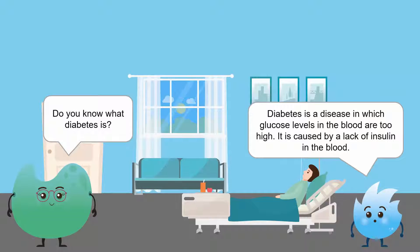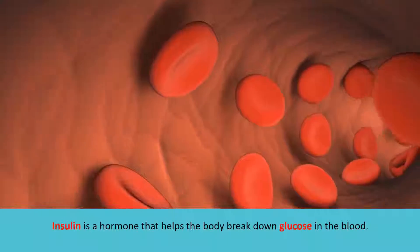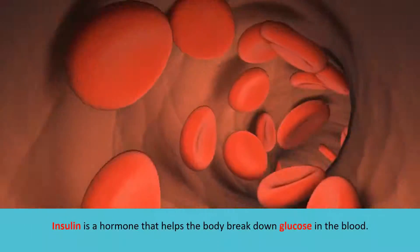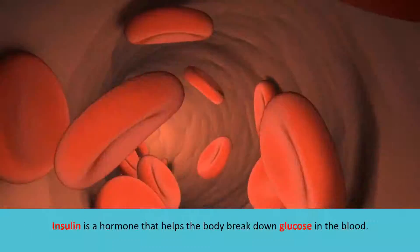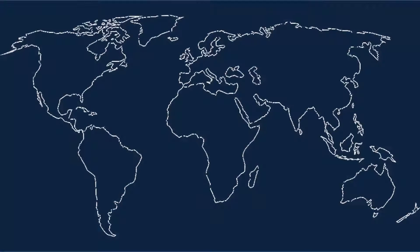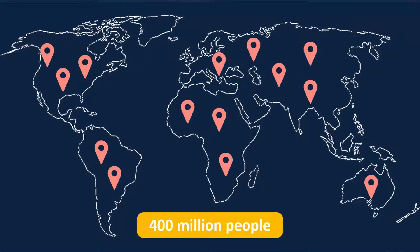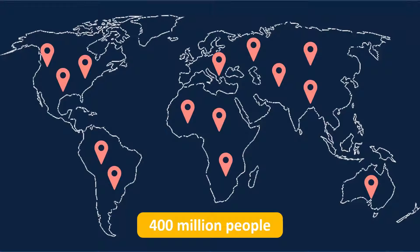You are absolutely right. Insulin is a hormone that helps the body break down glucose in the blood. Today, more than 400 million people in the world suffer from diabetes.